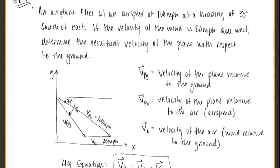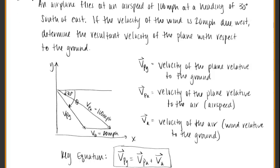Let's look at example three. You have an airplane flying at an airspeed of 100 miles per hour and heading at 30 degrees south of east. So let's look at the picture for just a second.